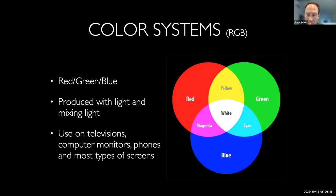This is important because it's how monitors and other electronic devices display color. If we were able to zoom in and look closely at a monitor, we could pick out individual little dots — either turned on or turned off — that are a combination of red, green, and blue dots producing the desired color. In old school monitors you used to be able to see this. It's those three dots that combine to form all the colors on an electronic screen.